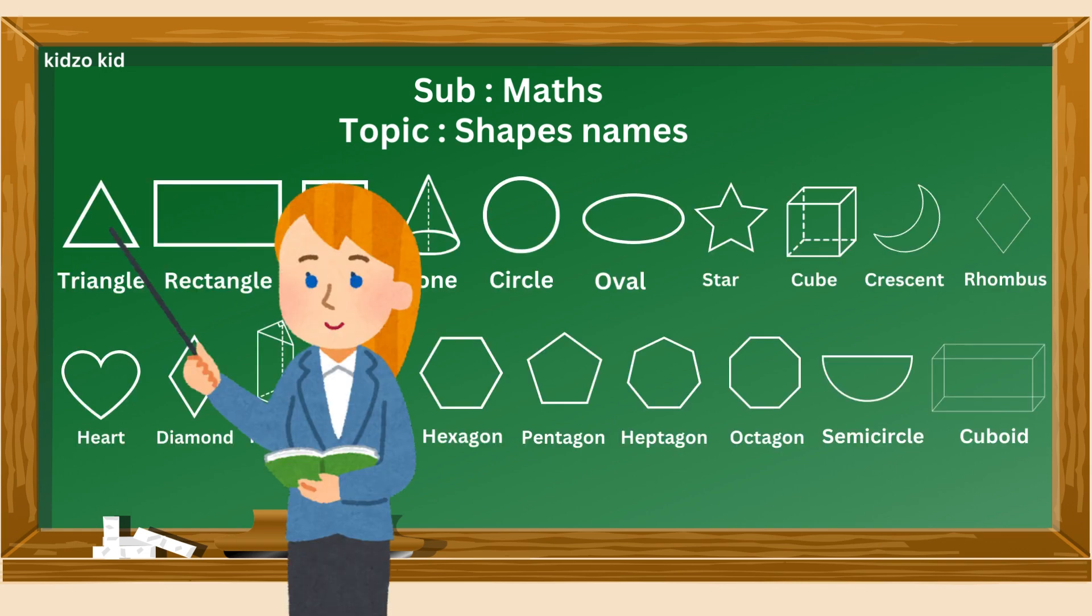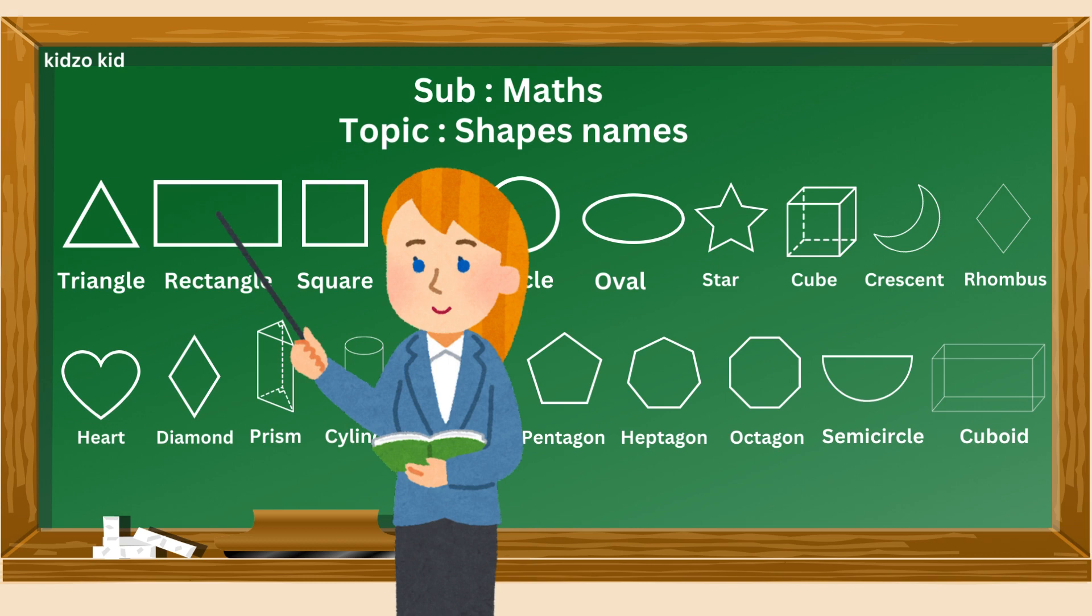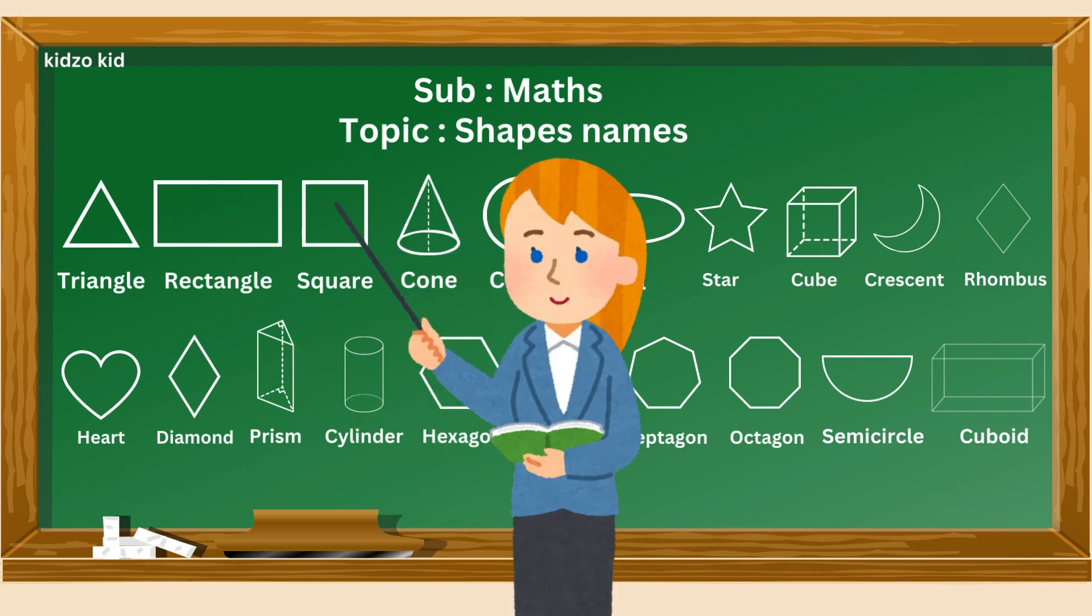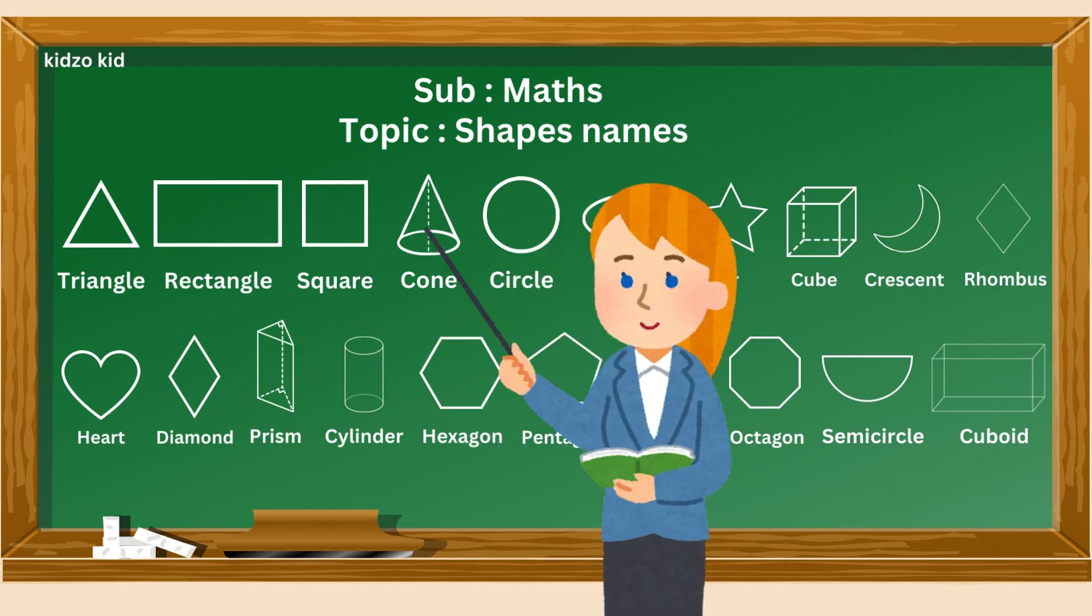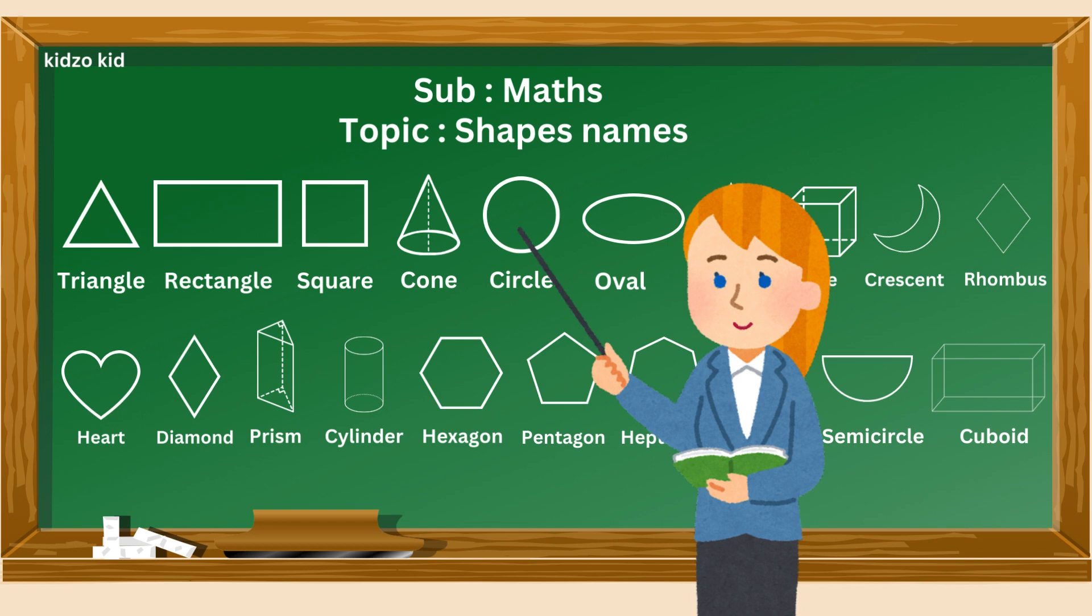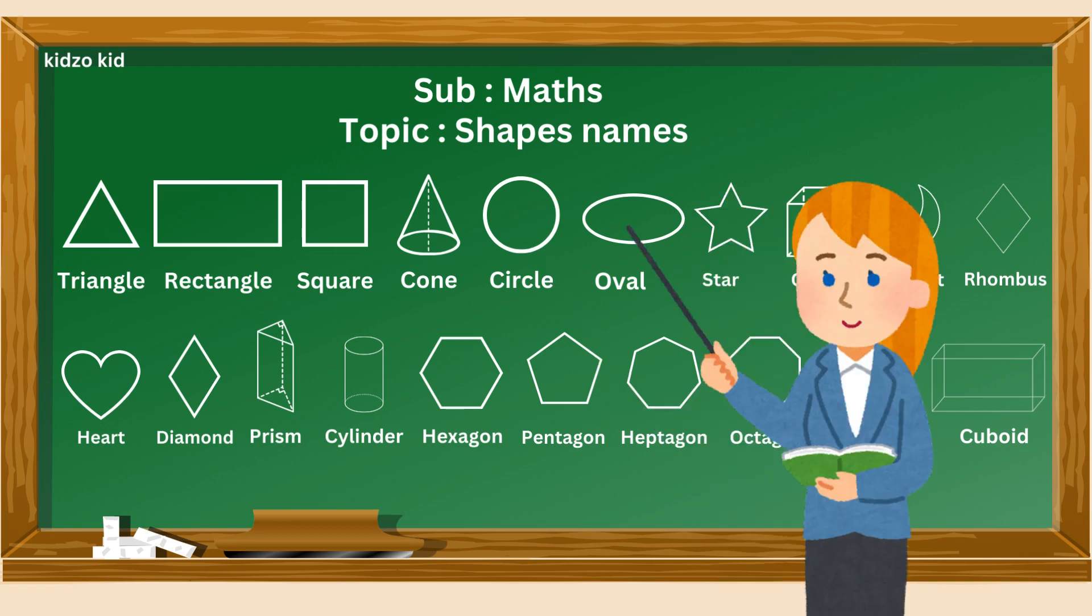T R I A N G L E Triangle. R E C T A N G L E Rectangle. S Q U A R E Square. C O N E Cone. C I R C L E Circle. O V A L Oval.